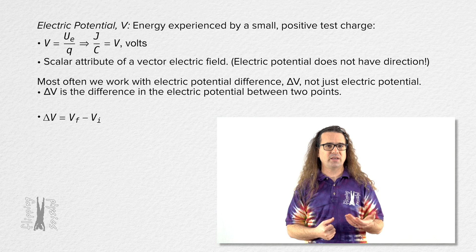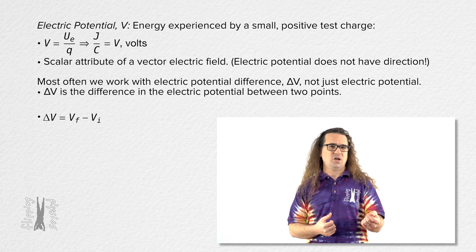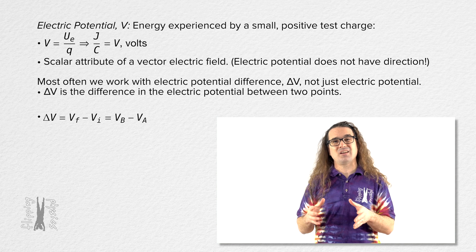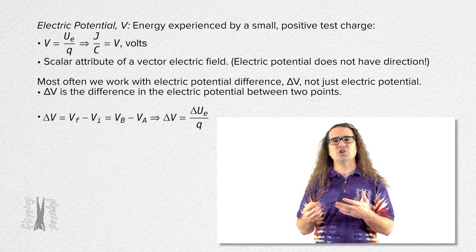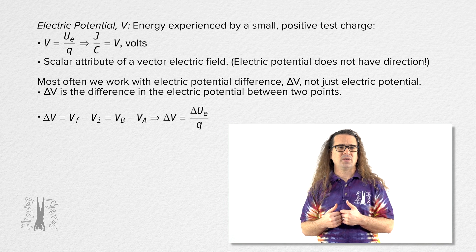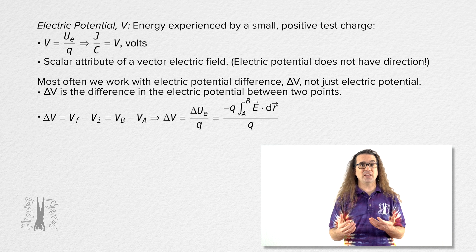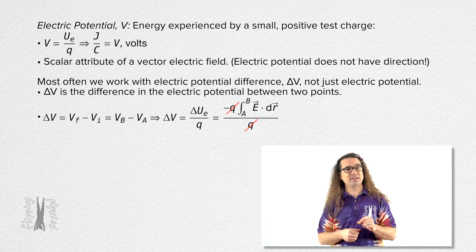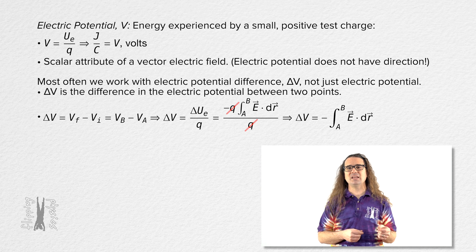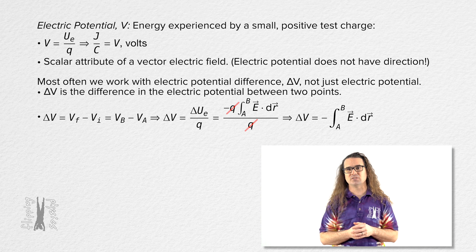Electric potential difference equals electric potential final minus electric potential initial. Often points A and B are used instead of initial and final. That means electric potential difference equals change in electric potential energy divided by charge. We can substitute the dot product integral equation in for change in electric potential energy and the charge cancels out, leaving electric potential difference equals the negative of the integral from point A to point B of the dot product of the electric field and the infinitesimally small displacement dr.